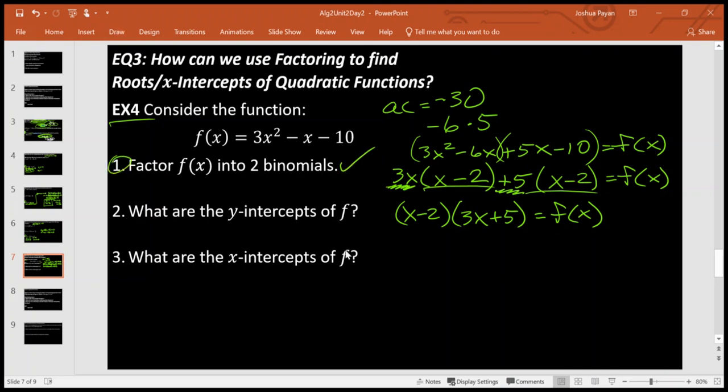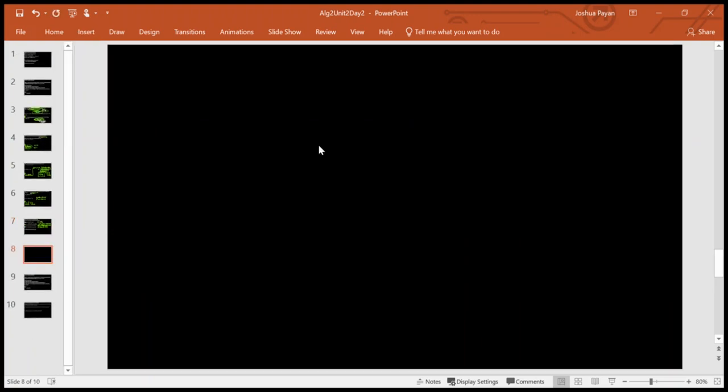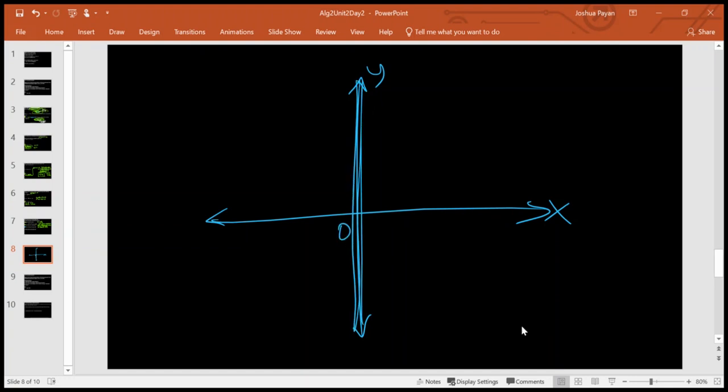Okay, so what are the y-intercepts of f? Okay, so if we're talking about y-intercepts, well, what does that mean? Well, y-intercepts happen where a function touches the y-axis, right? And that happens where x is equal to 0.